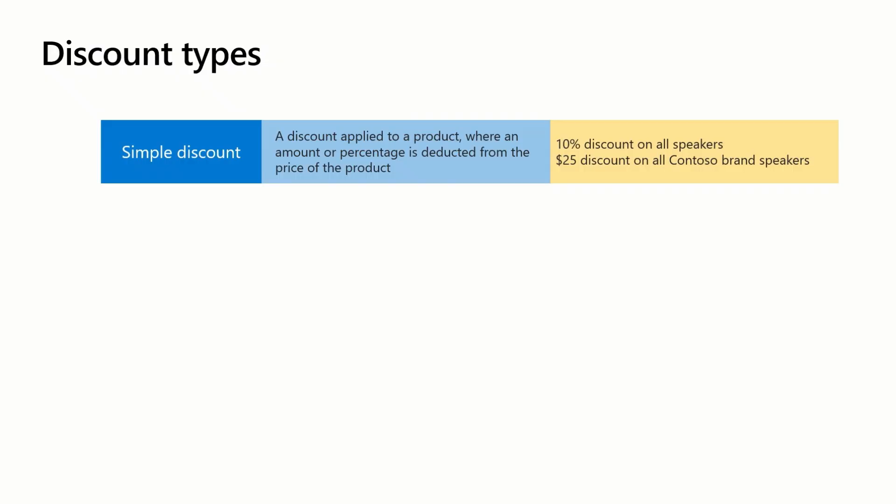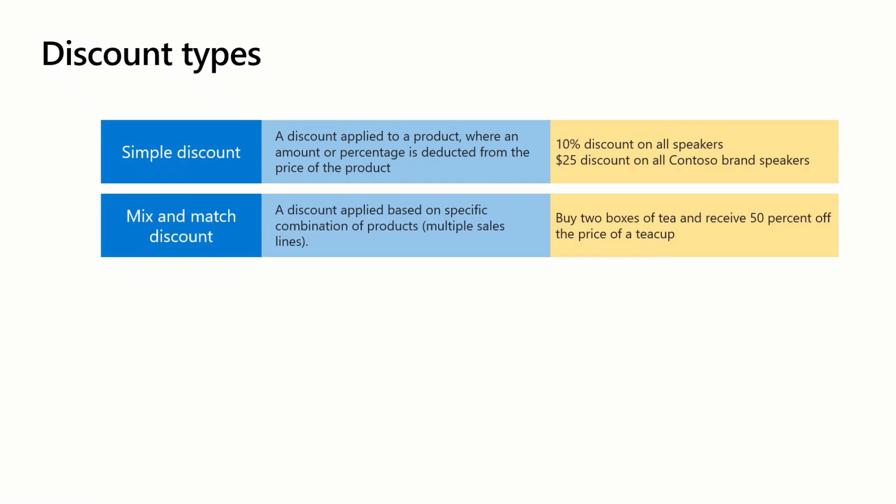With diverse needs and consumer demands across industries and business models, unified pricing management supports multiple types of discounts. Simple discounts allow for a simple amount or percentage applied to an item — for example, 10% discount on all speakers. Mix and match discount will consider multiple lines on a sales order when determining the discount qualification and calculation — for example, buy two boxes of tea and receive 50% off the price of a tea cup.